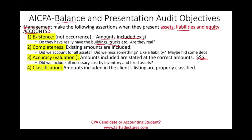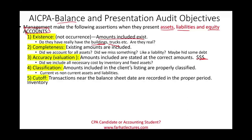Classification: amounts included in the client listing are properly classified. For balances, we're dealing with assets and liabilities, which could be either current or non-current — are they classified properly on the balance sheet? Cutoff: especially for transactions near the end of the balance sheet period, are they recorded in the proper period? For inventory, consider FOB shipping — as soon as we buy it, it's ours. FOB destination: it's not our inventory until we receive it. This makes a difference.